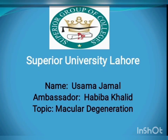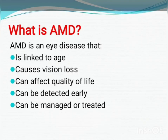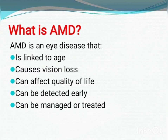Assalamu alaikum everyone, I hope you all are doing great. This is Usama Jamal from Superior University Lahore. Today we'll talk about macular degeneration, or AMD. AMD, or ARMD, stands for age-related macular degeneration. It is an eye disease that affects people aged 50 or older. It impairs vision and gets worse over time. The good news is that AMD can be detected early and can be managed or treated.